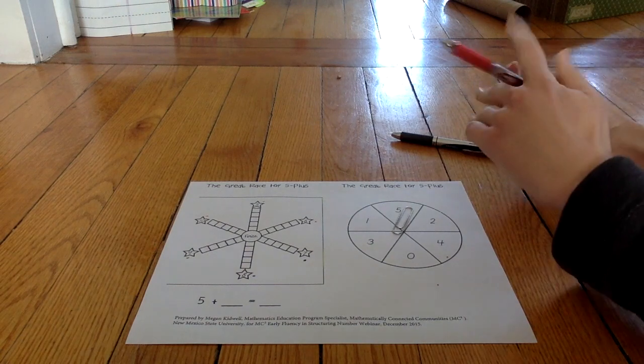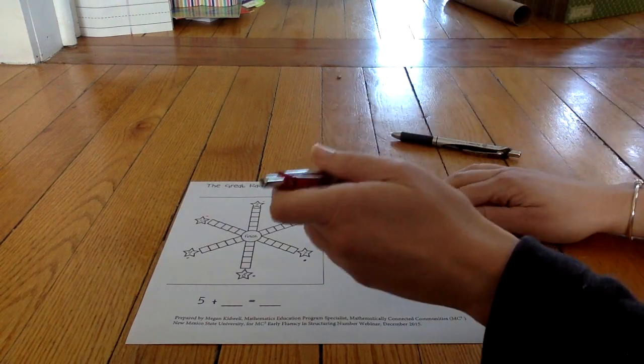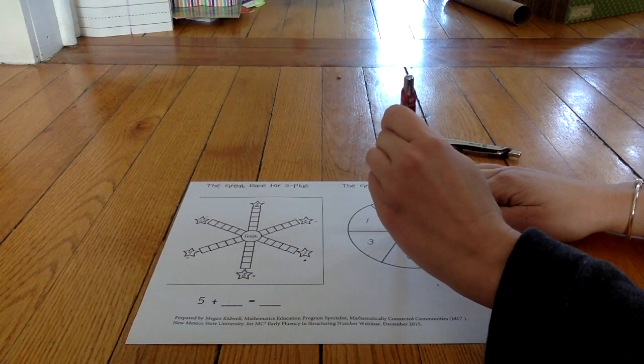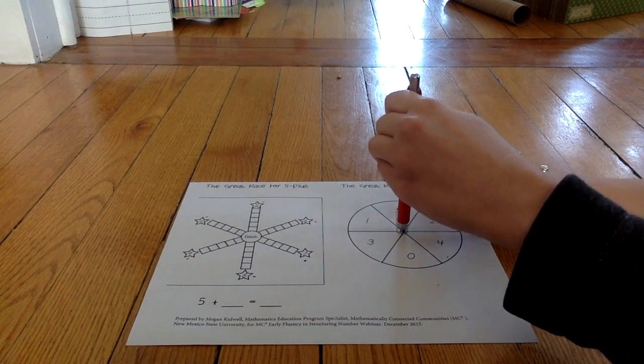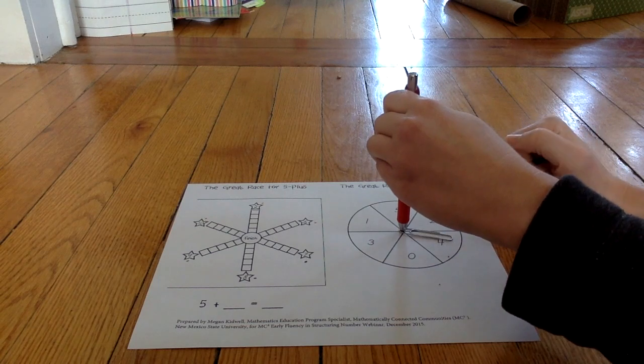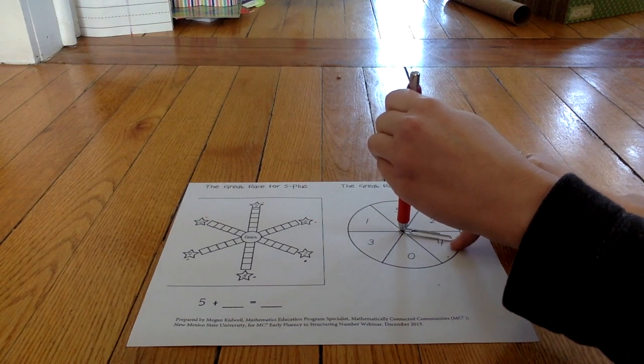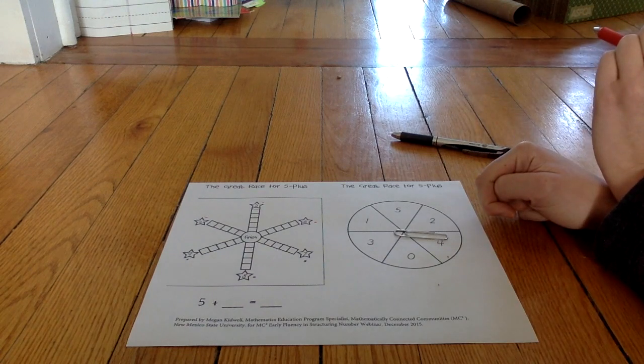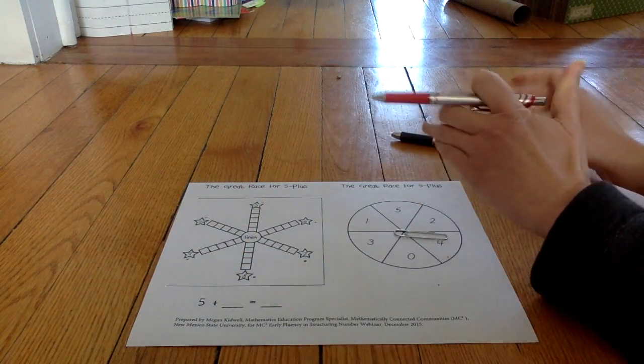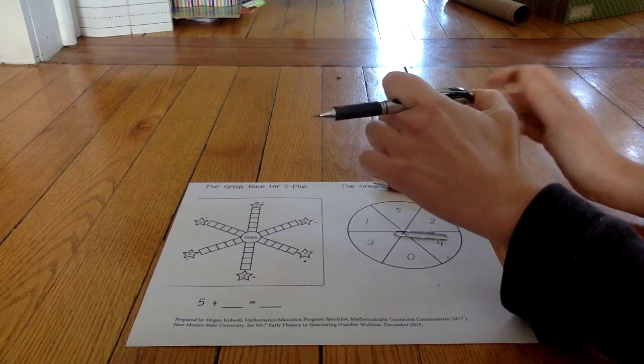It's player one's turn. Use your pencil or whatever you're working with and your paper clip and spin a number. Five plus four equals nine. So the player who has a nine gets to mark it with their color.